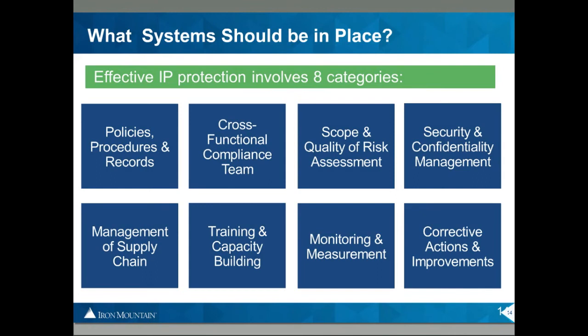Managing IP well with your supply chain is also key. Suppliers and employees often have no idea what proprietary information they're handling and what they're supposed to be doing with it. Security and confidentiality management — that's physical security and IT security — is also key. But just having a firewall is not going to do the trick. The systems you've got need to be designed with an awareness of what intellectual property and trade secrets you're trying to protect. Where are the company blueprints on your IT system? Who has access to them? Are they encrypted? Is access on a need-to-know basis? A properly designed physical and IT security system must actually take account of your IP.